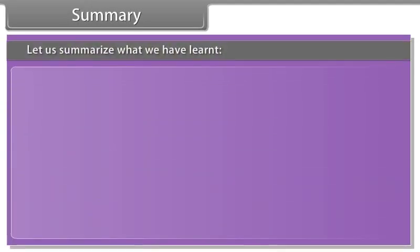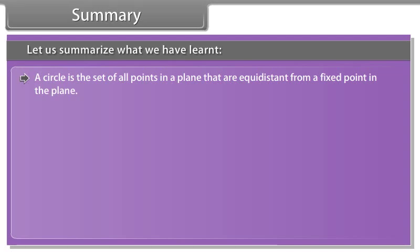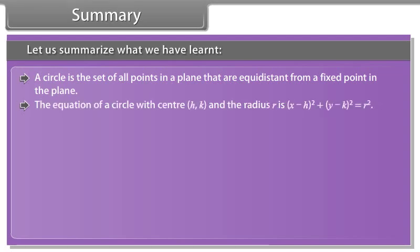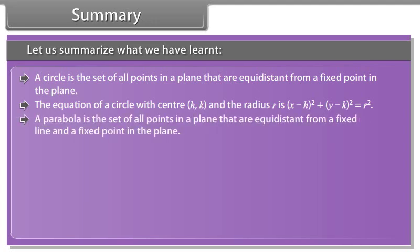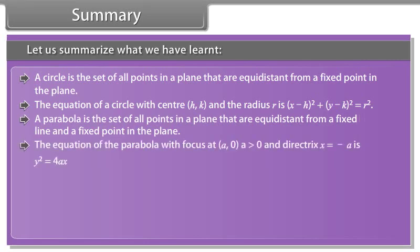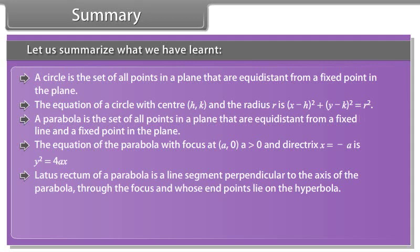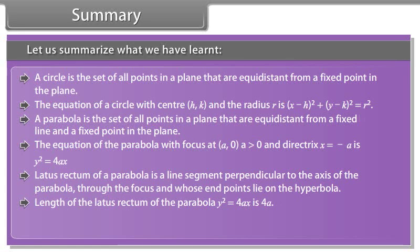Let us summarize what we have learned. A circle is the set of all points in a plane equidistant from a fixed point. The equation of a circle with center (h, k) and radius r is: (x − h)² + (y − k)² = r². A parabola is the set of all points equidistant from a fixed line and a fixed point. The equation of the parabola with focus at (a, 0), where a > 0, and directrix x = −a is y² = 4ax. The latus rectum of a parabola is perpendicular to the axis through the focus, and its length for y² = 4ax is 4a.